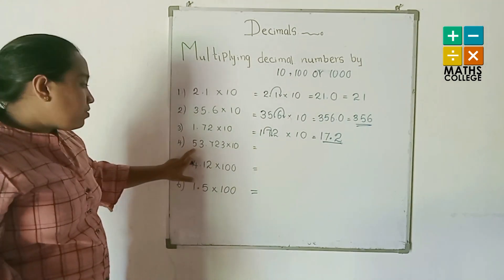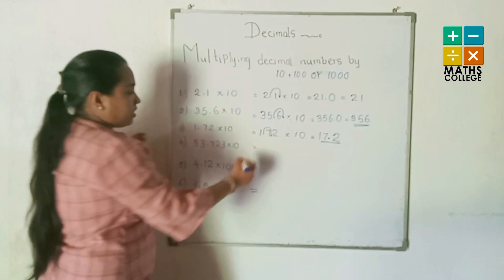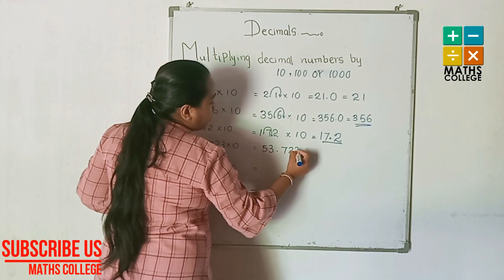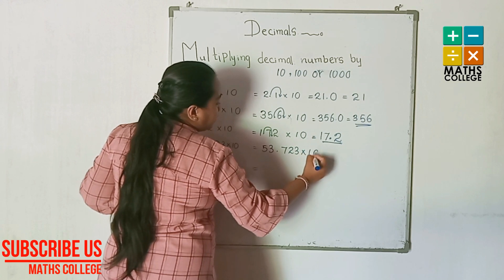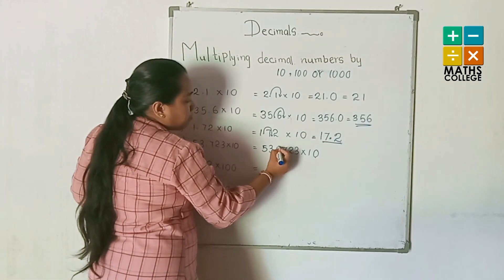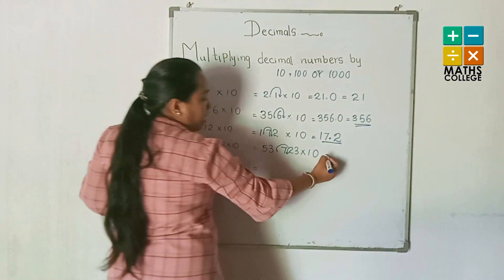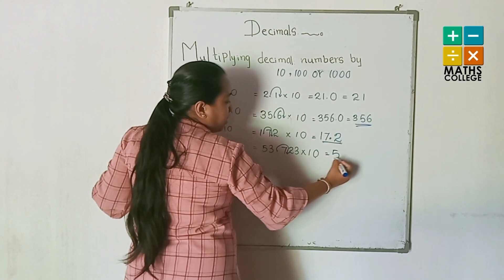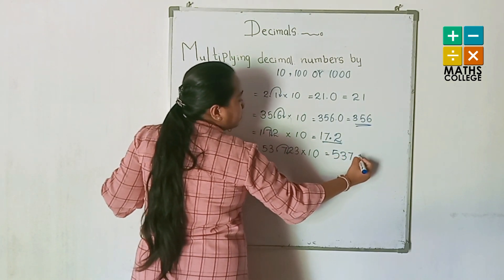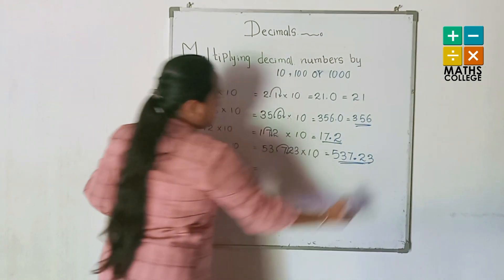Fourth ×10 example: 53.723 multiplied by 10. Ten has one zero, so the decimal point jumps one place to the right. The answer is 537.23.